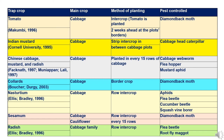In cabbage and cauliflower cole crops, various trap crops control different insect pests. Tomato is used as an intercrop to control diamondback moth. Indian mustard is used as a strip crop to control cabbage head caterpillar. Chinese cabbage, mustard, and radish are planted every 15 rows of cabbage to control cabbage webworm, flea hopper, and mustard aphid. Collards are grown as a border crop to control diamondback moth. Nasturtium is grown as a row intercrop to control aphids, flea beetle, cucumber beetle, squash vine borer. Sesame and radish are also used to control diamondback moth and flea beetle respectively.